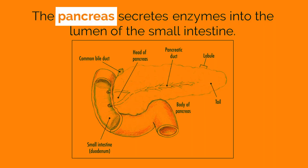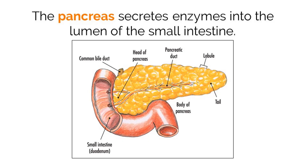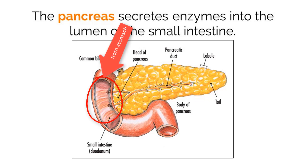Let's take a closer look at the pancreas, depicted in yellow on this image. The pancreas secretes enzymes into the small intestine via the pancreatic duct. Importantly, the pancreas releases these enzymes at the beginning of the small intestine right after the food exits the stomach. This, along with the very large surface area of the small intestine, ensures that there is enough time for food to mix with these enzymes so it can be properly digested.